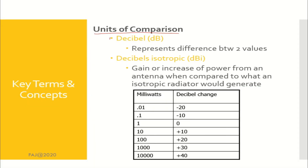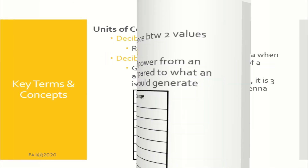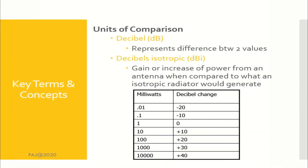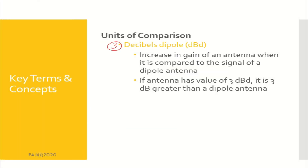For units of comparison there are decibel, decibels isotropic, and decibels dipole. Decibel represents the difference between two values. Decibels isotropic, or dBi, is the gain or increase of power from an antenna when compared to what an isotropic radiator would generate. For decibels dipole, or dBd, it is the increase in gain of an antenna when compared to the signal of a dipole antenna.